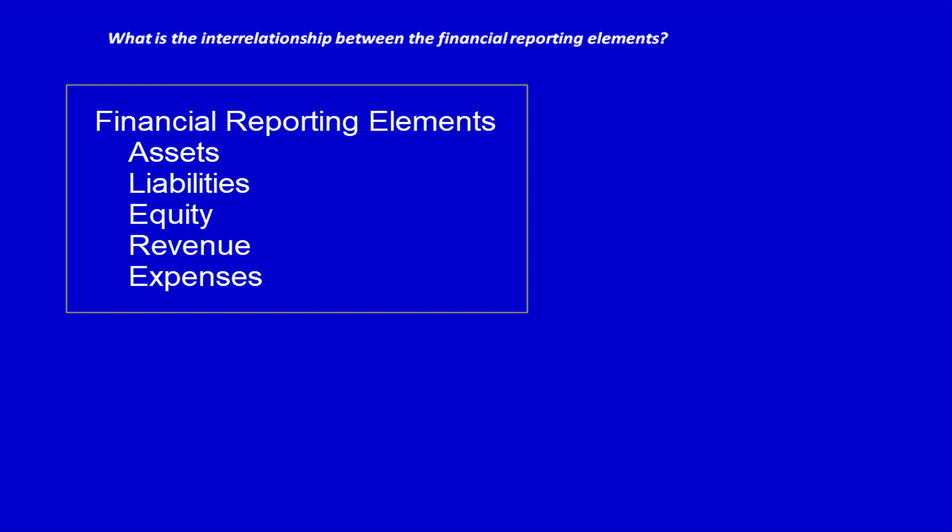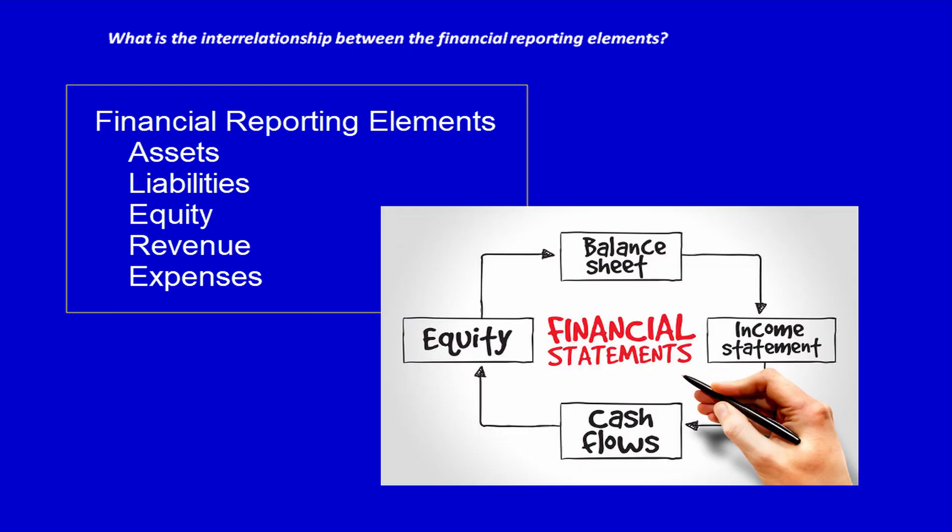Remember that the elements are used by the accounting system to group financial data so that it can eventually produce financial information in the form of financial statements. In the first video we noted that our focus would be on profit-oriented businesses, which are businesses whose purpose is to make a profit.